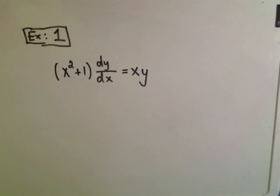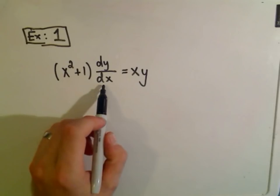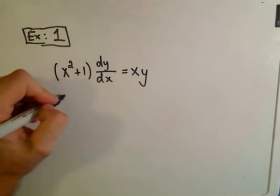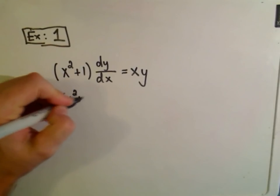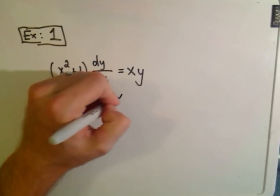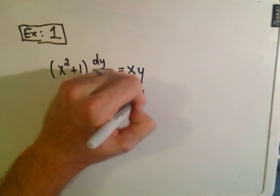Basically get all your x's on one side, all your y's on the other, and integrate. You want your dx's out of the denominator. So, the first thing, I'm going to multiply both sides of this by my dx. So I'll have x squared plus 1 dy equals x times y dx.